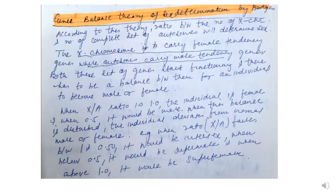To summarize the gene balance theory of sex determination given by Bridges: it is the X/A ratio which determines sex in Drosophila, as we have discussed in detail in this lecture.